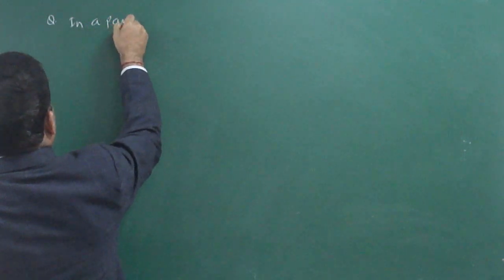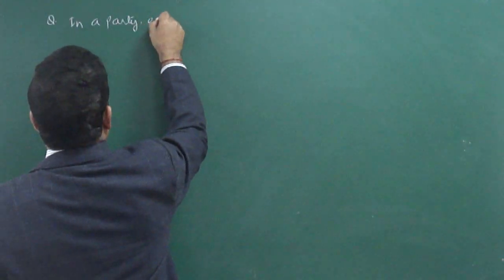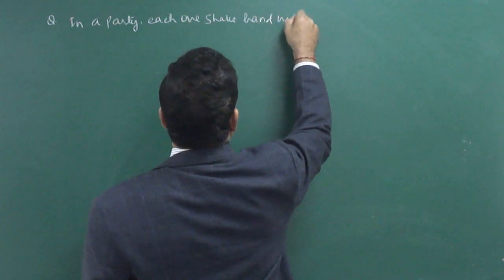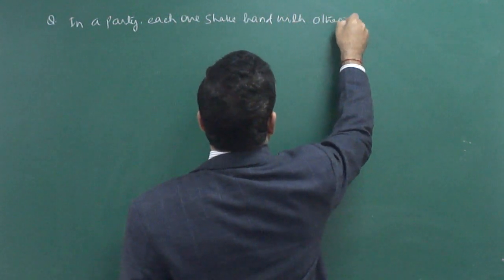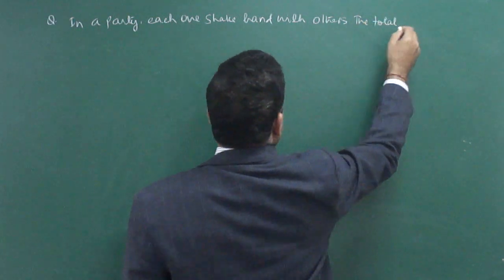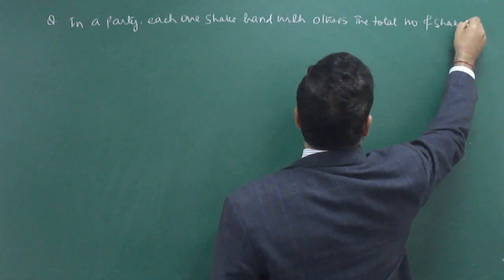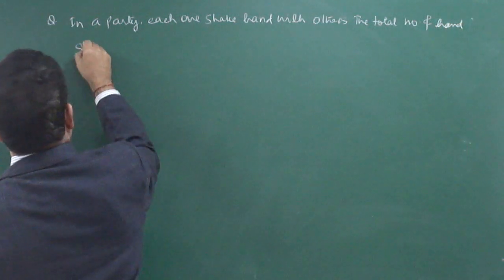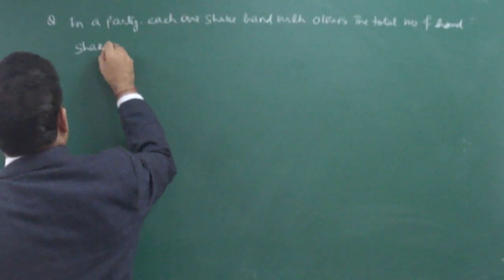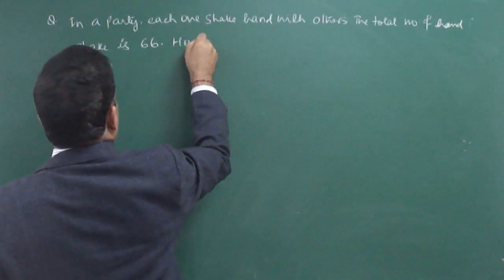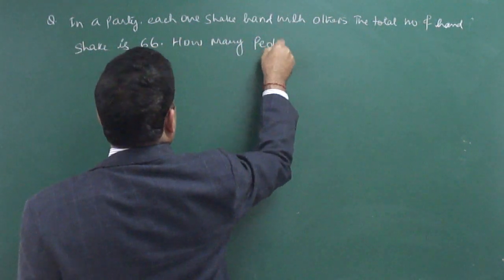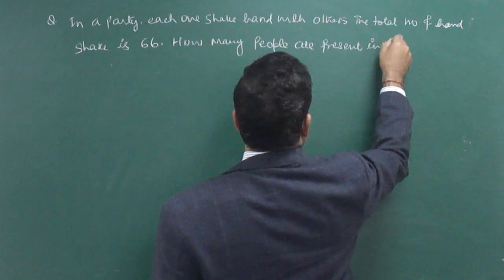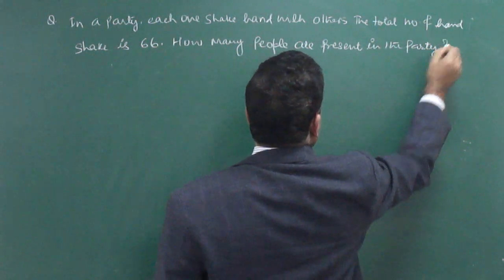In a party, each one shakes hands with others. The total number of handshakes is 66. How many people are present in the party? This is the question.